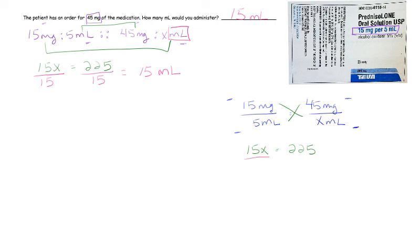And then we solve it the same way as we did the linear. You're going to divide by what is next to x, which is 15. What you do to one side you must do to the other because both sides should be even, and you get 15 milliliters.